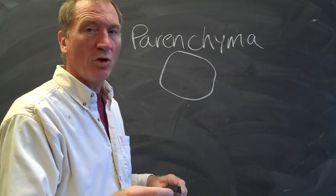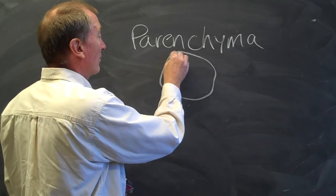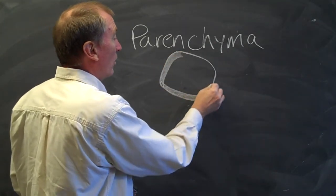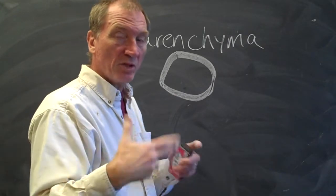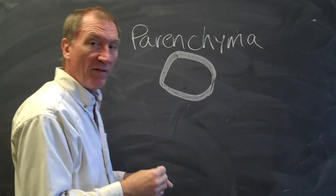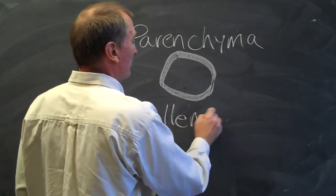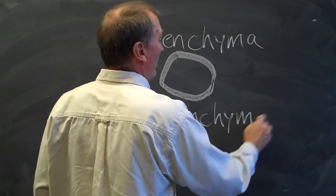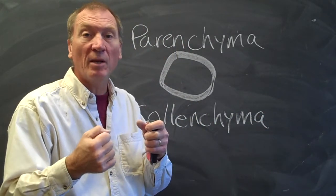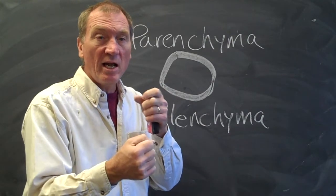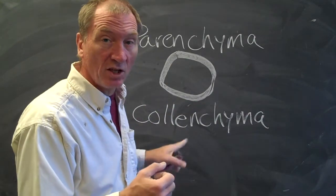So parenchyma cells are thin walled. Then there's a type of thicker walled cell where the primary wall of the cell becomes thicker, more cellulose in it. And that's called colenchyma, C-O-L-L-E-N-C-H-Y-M-A. Colenchyma cells give the plant some rigidity. And like parenchyma cells, colenchyma are also alive. Both of these cell types are alive.